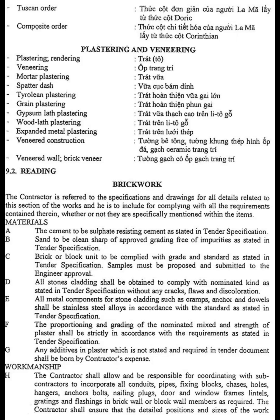Samples must be proposed and submitted to the engineer for approval. D. All stone cladding shall be obtained to comply with nominated kind as stated in tender specification, without any cracks, flaws, and discoloration. E. All metal components for stone cladding, such as cramps, anchors, and dowels, shall be stainless steel alloys in accordance with the standard as stated in tender specification. F. The proportioning and grading of the nominated mixing and strength of the plaster shall be strictly in accordance with the requirements as stated in tender specification. G. Any additives in plaster which are not stated and required in the tender document shall be borne by the contractor's expense.